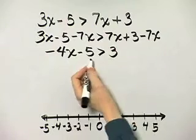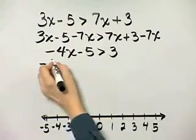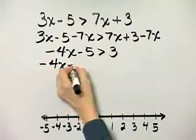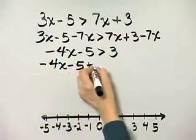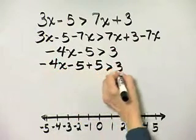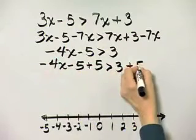And I'll do so by adding 5 to both sides. So here's the left side. I'll add 5. Here's the right side. I'll add 5.